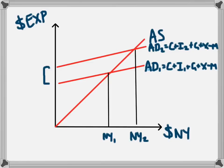So a decrease in the interest rate led to an increase in investment, which led to an increase in aggregate demand and an increase in national income from NY1 to NY2.